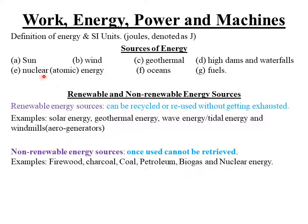The fifth source of energy is nuclear energy, also called atomic energy. When the unstable nucleus of an atom is split through the reaction known as nuclear fission, energy is released. This energy is used to heat water to produce steam at very high pressure, which is then used to drive turbines so as to produce electricity by the same process of electromagnetic induction. Nuclear fission falls under radioactivity, which is the last chapter in Form 4.